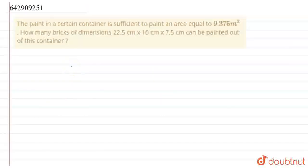Hello everyone. So basically in this question, the paint in a certain container is sufficient to paint an area equal to 9.375 meter square. How many bricks of dimensions 22.5 centimeter into 10 centimeter into 7.5 centimeter can be painted out of this container?